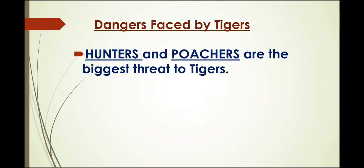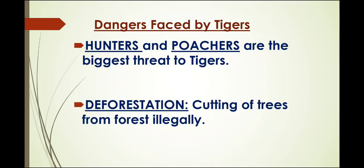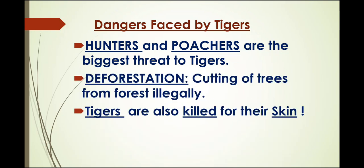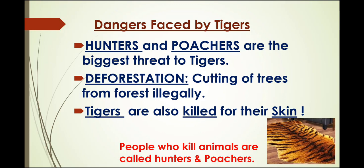So what are the dangers faced by tigers? Hunters and poachers are the biggest threat. Poachers are people who hunt animals and sell their body parts to make money. Hunters and poachers kill tigers and sell their beautiful skin at a very high cost. The second reason is deforestation — the cutting of trees from a large area of forest. Forest is the home for tigers and many other animals. If trees are not there, where will the animals live?